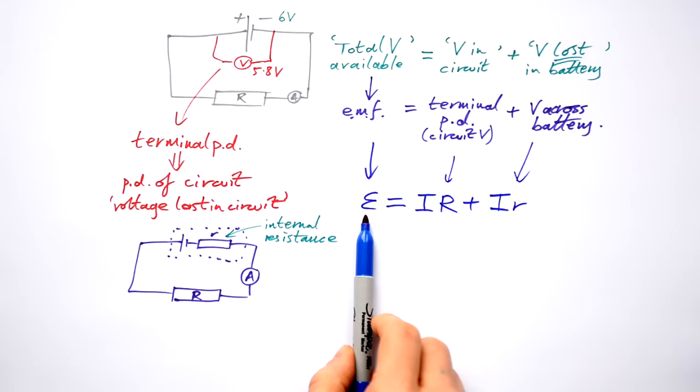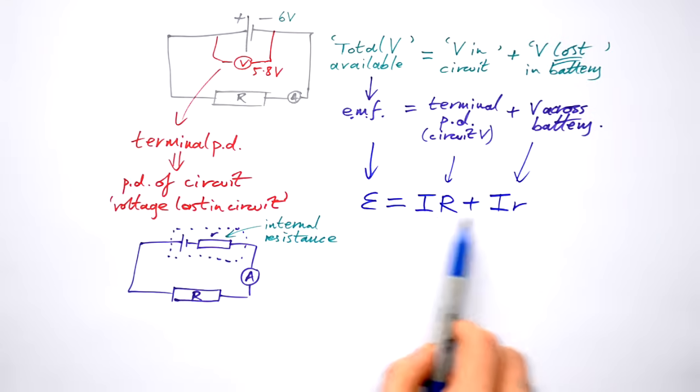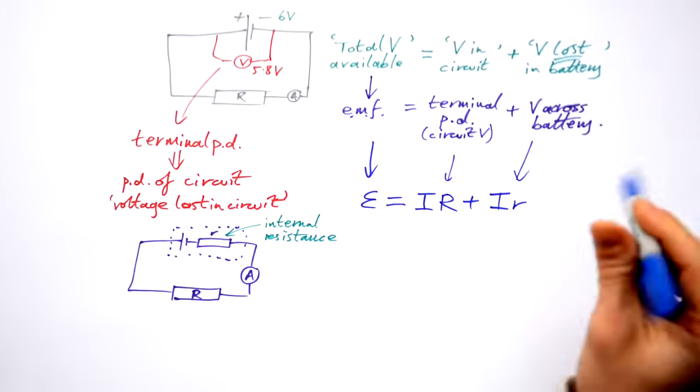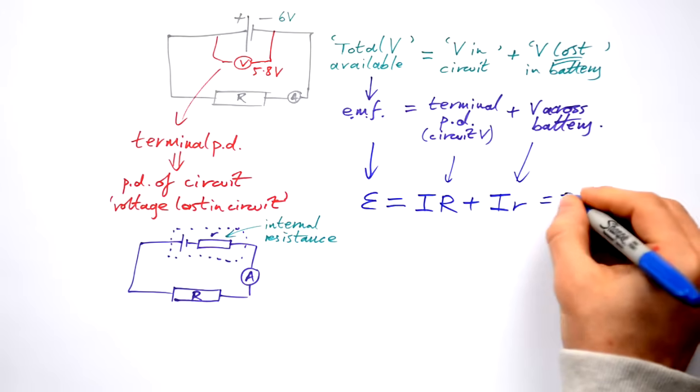Can you see? All this is saying is that total voltage available, most of it goes to the circuit, but some of it is lost in the battery due to internal resistance. We can factorize that.